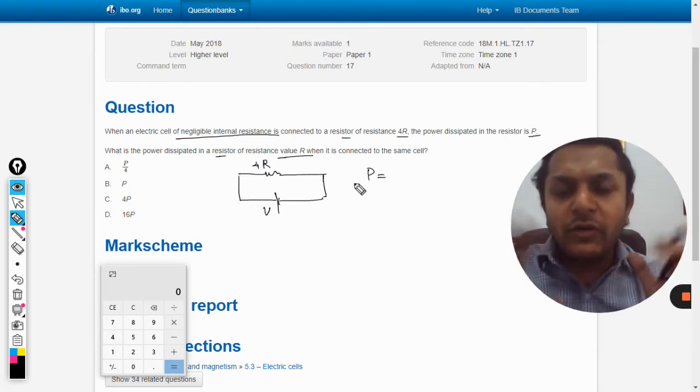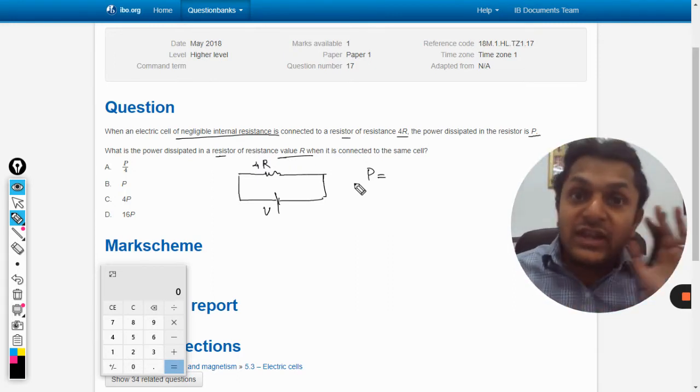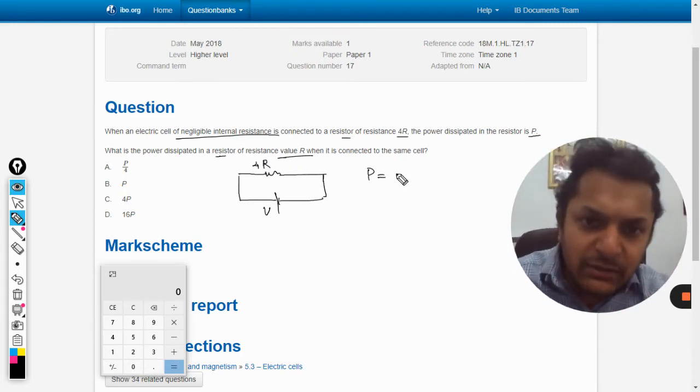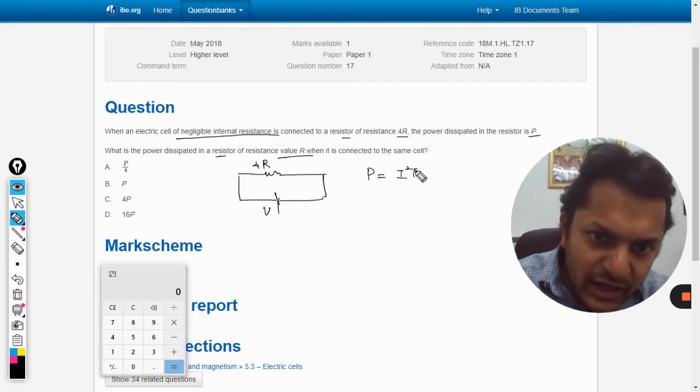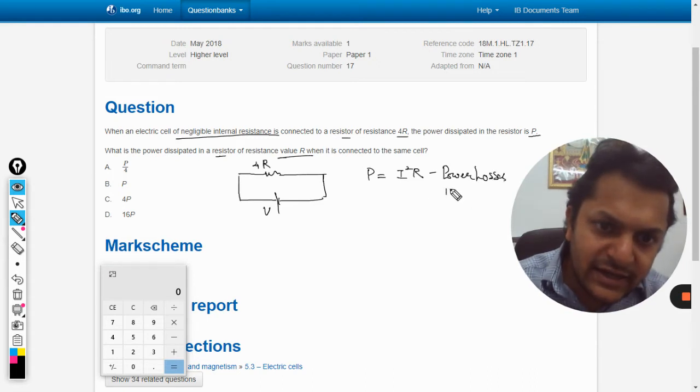First of all, there are three formulas which are used. Number one is I²R. This is used for calculating the power losses in resistors.